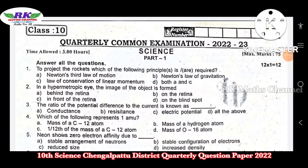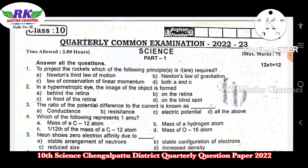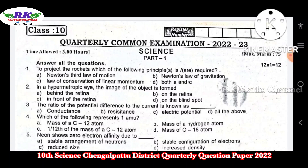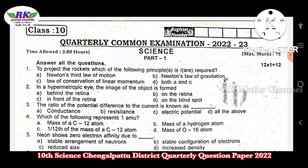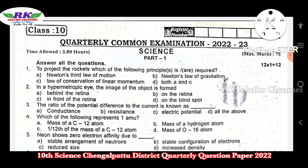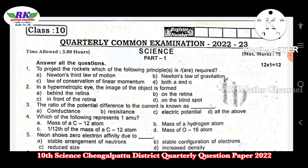Hi students, welcome to RKMS channel. This is 10th class Science Soda Quarterly Common Examination question paper, September 2022-23. I think it's one of the Chengalpur Districts. Total of 75 marks are available in the description. You can download it in the future. So we can see the question paper.